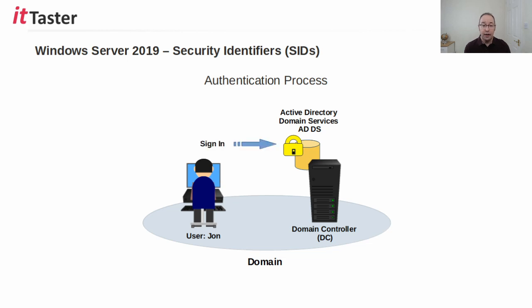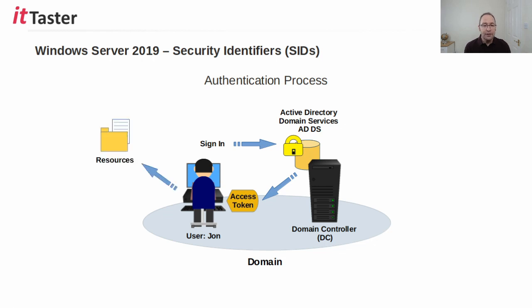Firstly, the user signs in by typically presenting a username and password. When signing on to the domain, this is forwarded to a domain controller. Active Directory domain services will validate the information, and if the validation is successful, an access token is generated. The access token contains the user's security settings and the all-important security identifier, the SID. The settings contained within the access token determine the resources that the user is able to access. So let's go over to the server in the lab and take a look at SIDs in action.